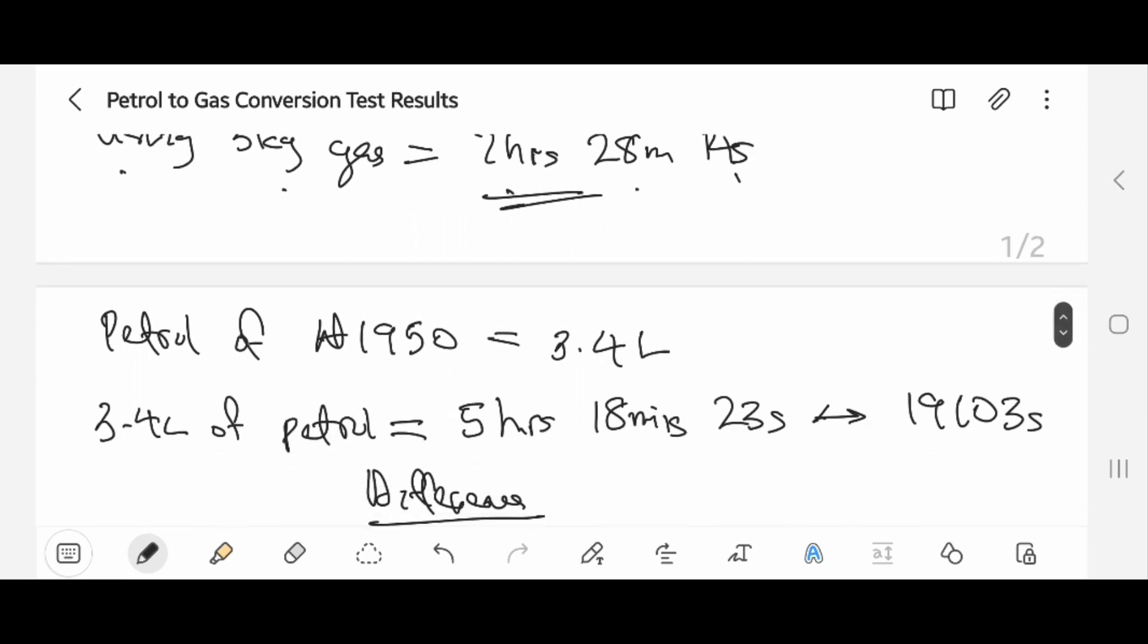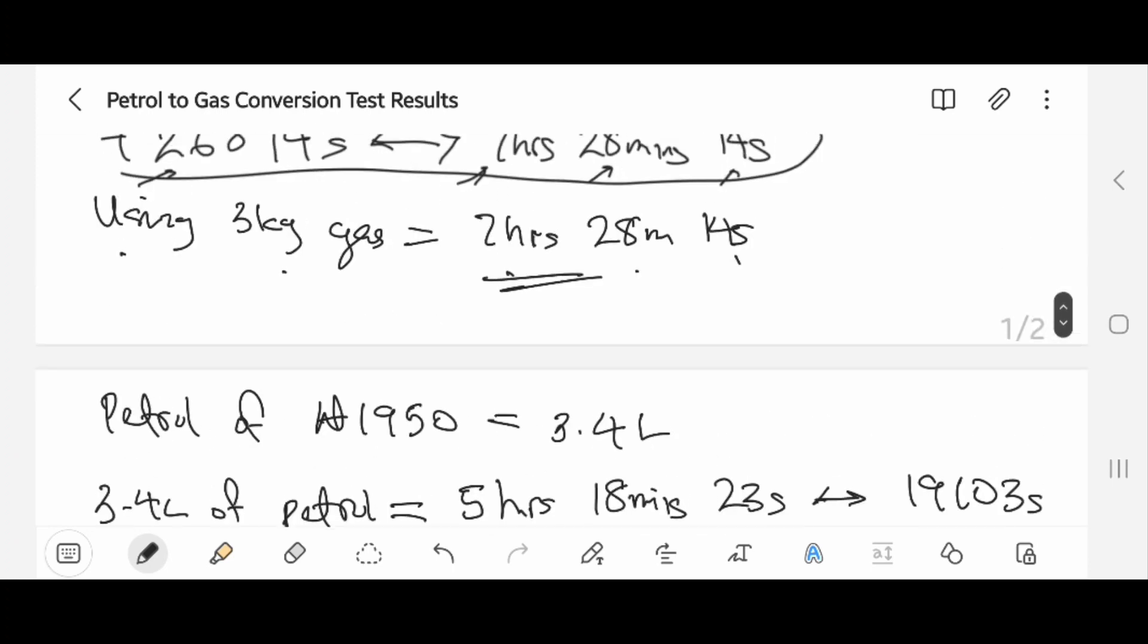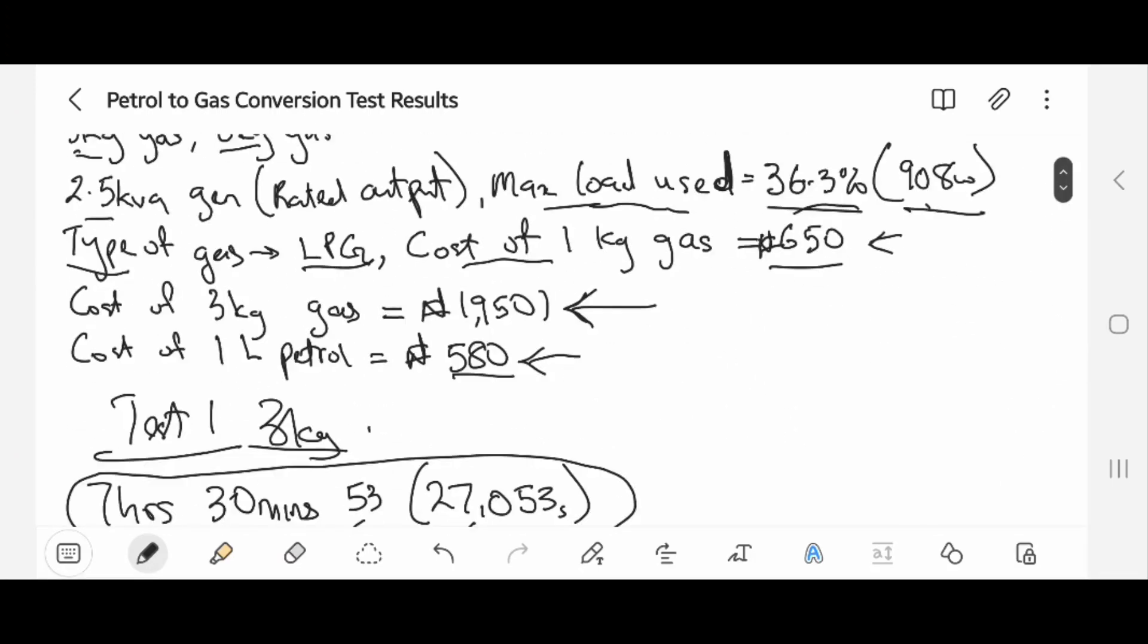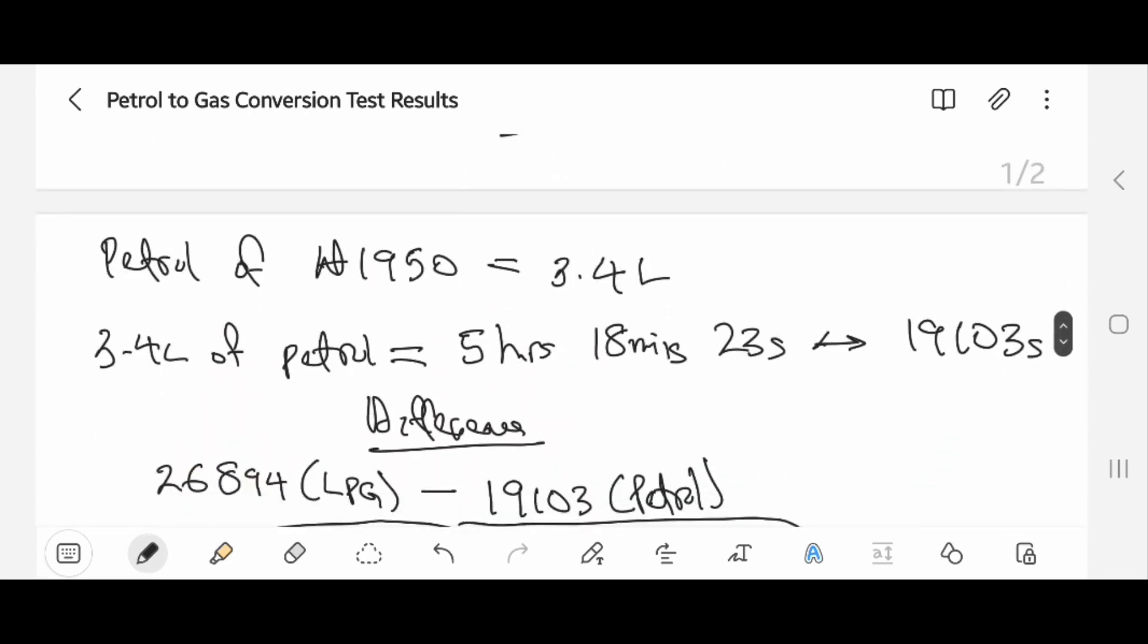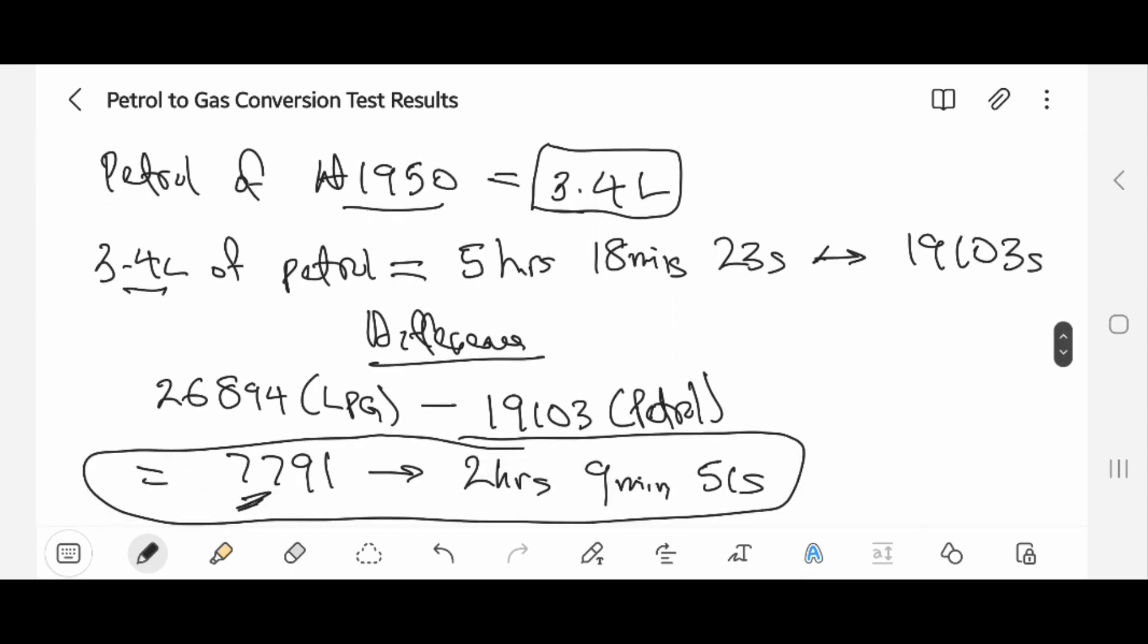Now we move to the petrol aspect. For the 3kg, remember I bought it for 1,950 naira. So what I did is I bought the same amount of fuel, which gave me 3.4 liters. I used that same 1,950 naira to buy petrol and I got 3.4 liters. I did another test—these are the reasons why my upload came kind of late.